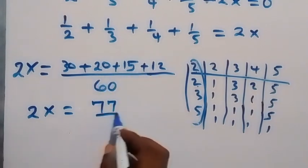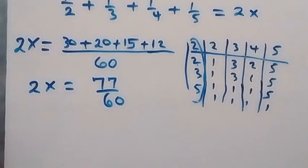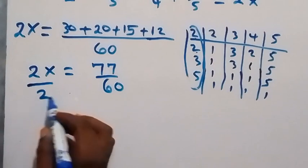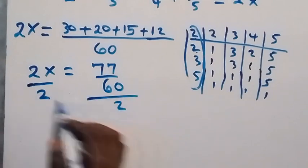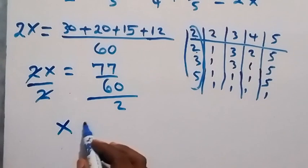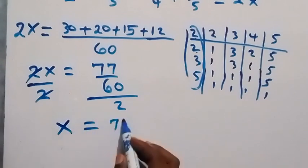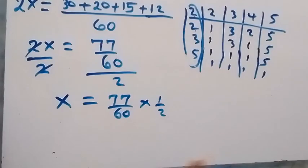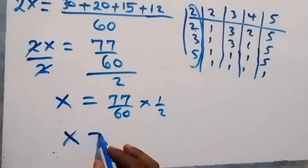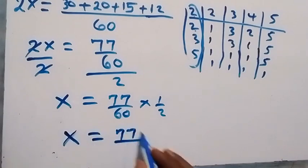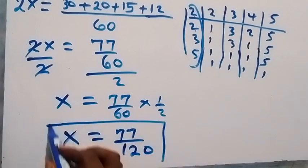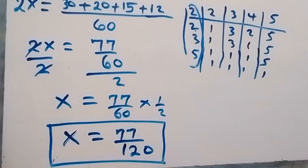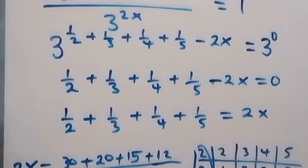Since we want the value of x, we divide both sides by 2. So x equals 77 over 60 times 1 over 2, which gives us x equals 77 over 120. Now let's check by substituting this value back into the original problem.